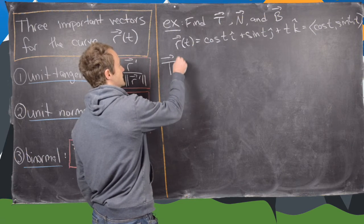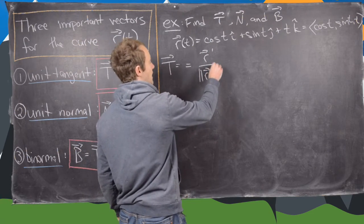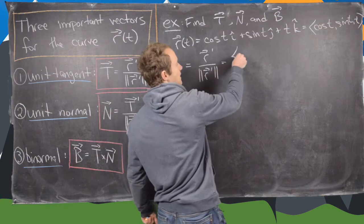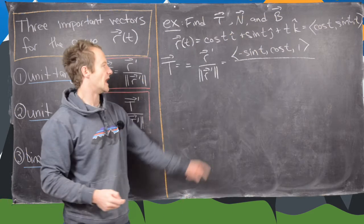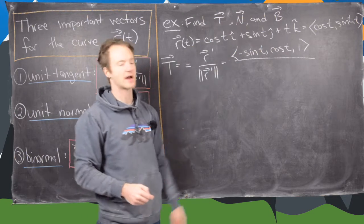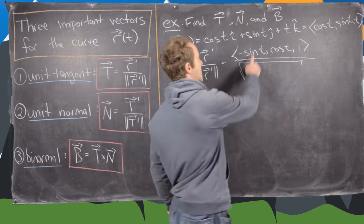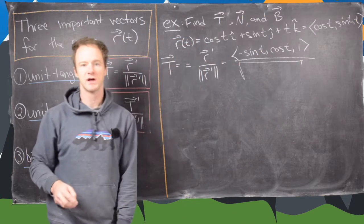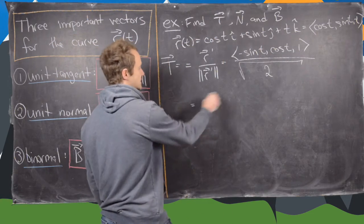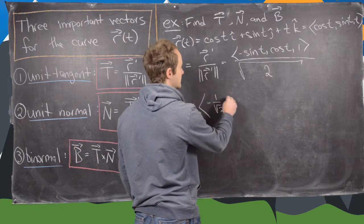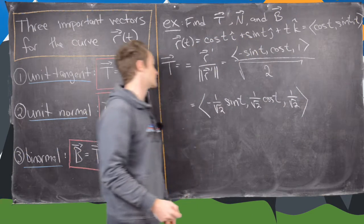Let's find the unit tangent vector T, which is the derivative of the curve divided by the magnitude of that derivative. The derivative is (−sin t, cos t, 1). The magnitude is the square root of sine squared plus cosine squared plus 1, which is the square root of 2. So T simplifies to (−(1/√2) sin t, (1/√2) cos t, 1/√2).